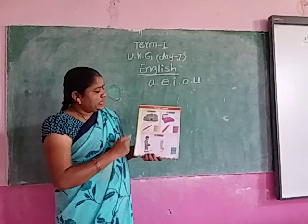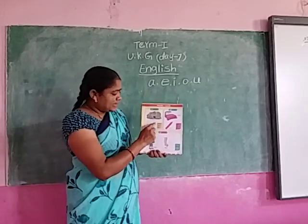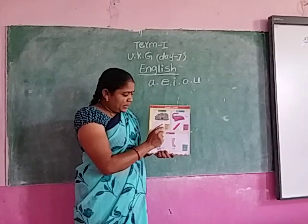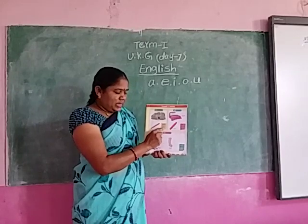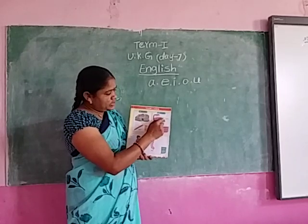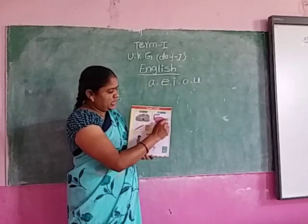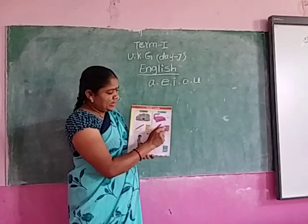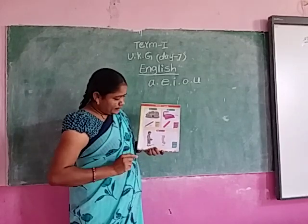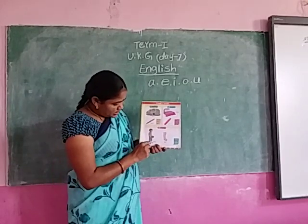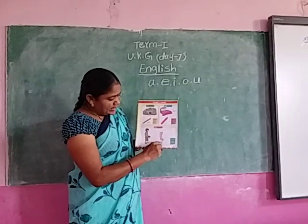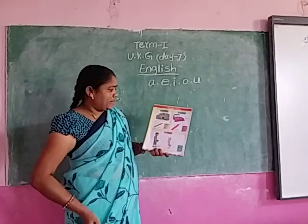See, one more time. EN words: D-E-N den, P-E-N pen, M-E-N men, H-E-N hen, T-E-N ten. Next, ED words: B-E-D bed, R-E-D red, L-E-D led, W-E-D wed. Next, EG words: B-E-G beg, L-E-G leg, P-E-G peg.